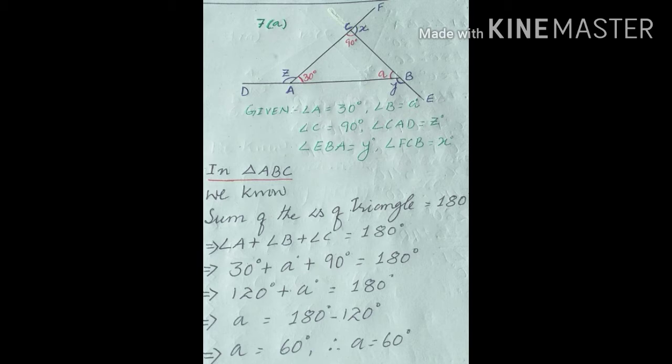On the left-hand side, 30 plus 90 equals 120, so 120 plus a equals 180 degrees. Transferring 120 to the right side, a equals 180 minus 120, therefore a equals 60 degrees. We now have all three interior angles.